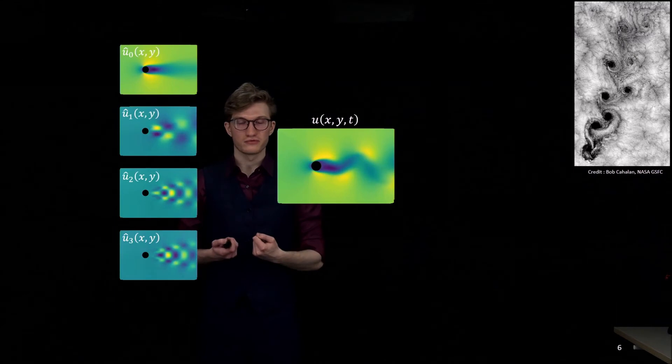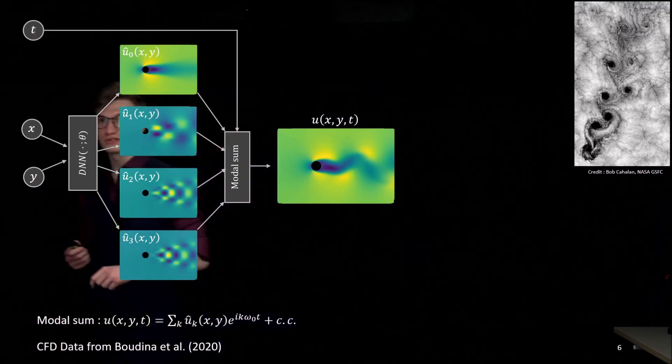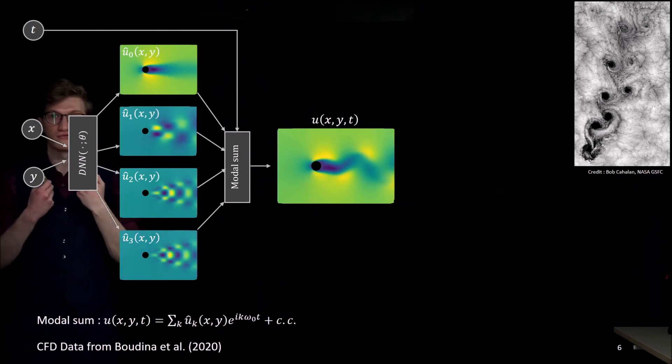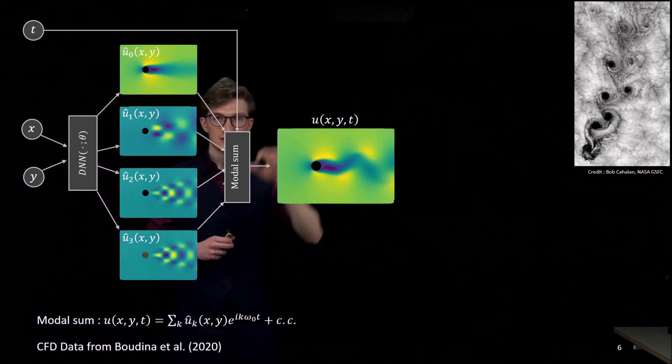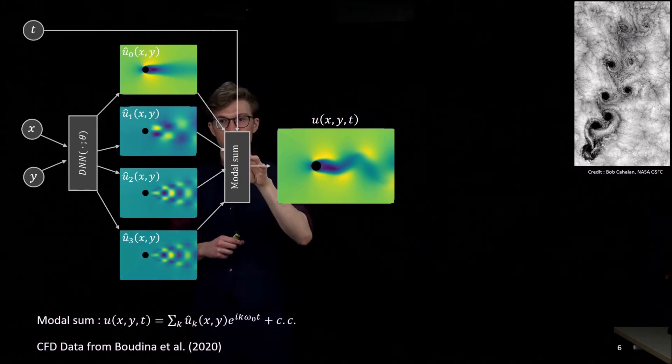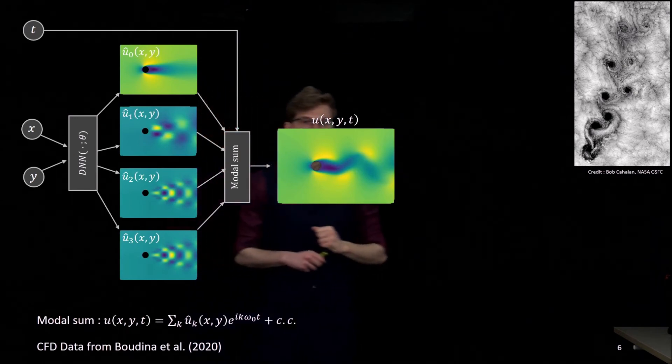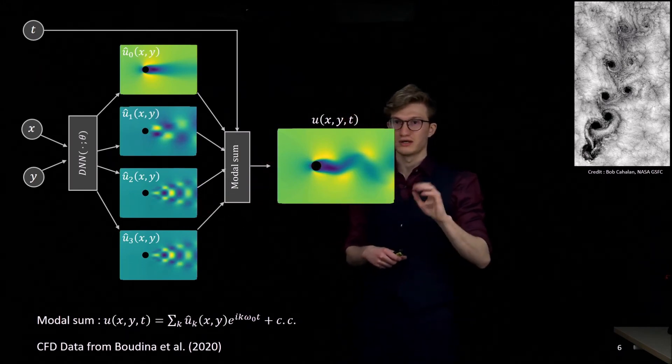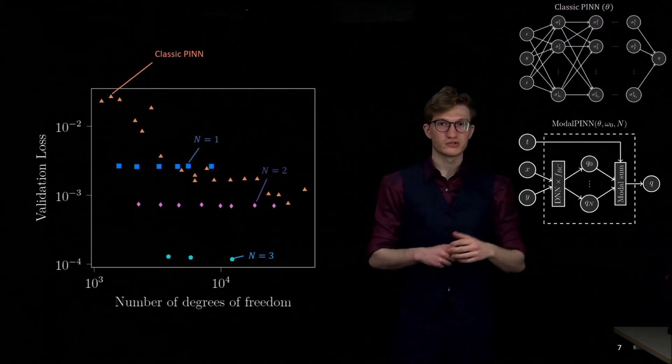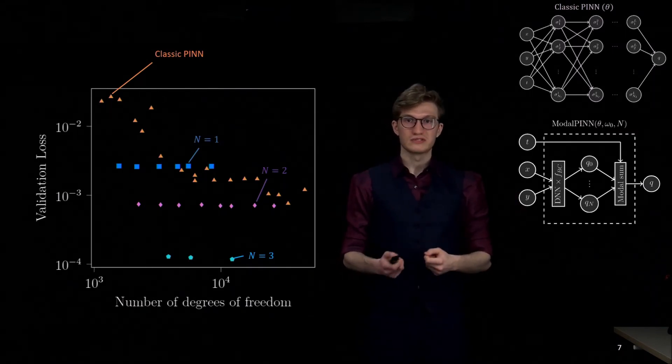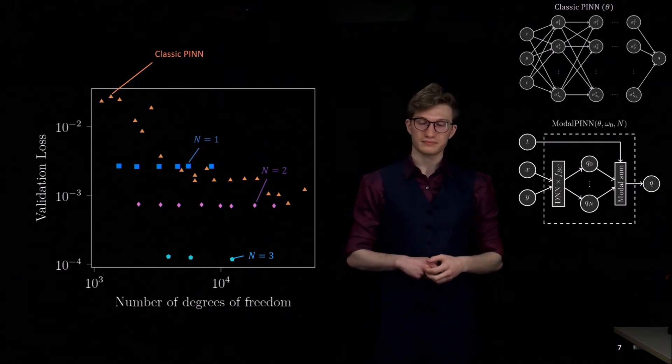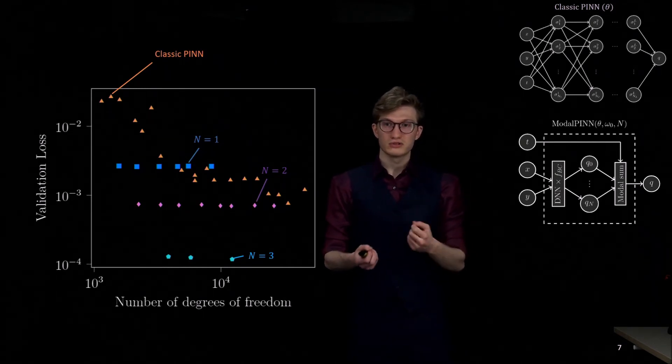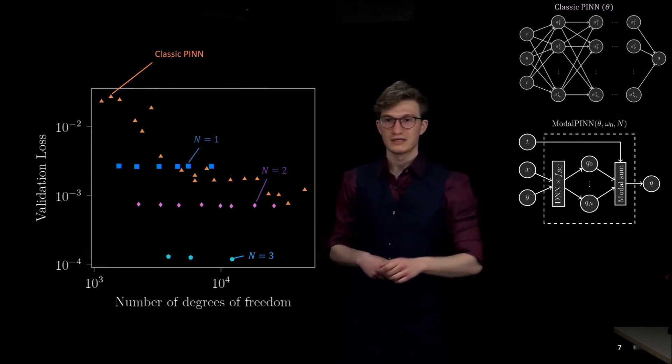So that's what we did to enforce this simplicity. We make sure that the neural networks approximate these mode shapes only as a function of x and y coordinates. We choose the number of mode shapes and we input the fundamental frequency. And then we recover this three-dimensional information by doing the modal sum directly into the neural networks. You can see here the modal sum and that's directly what is done here. From what we have said, it should be far easier to approximate 2D functions instead of three-dimensional functions. We wanted to test that. To do so, we did several trainings of a classic PINN and a modal PINN with the same training time and the same computational resources.